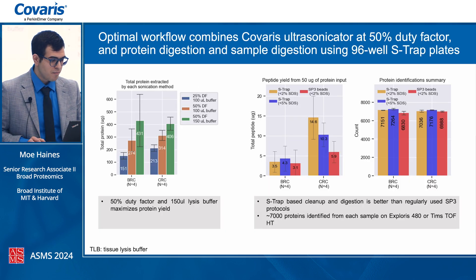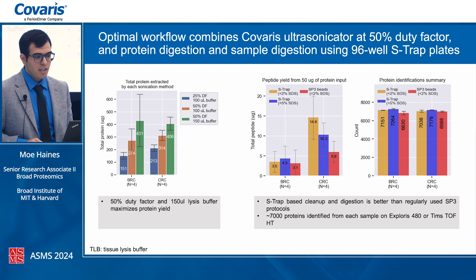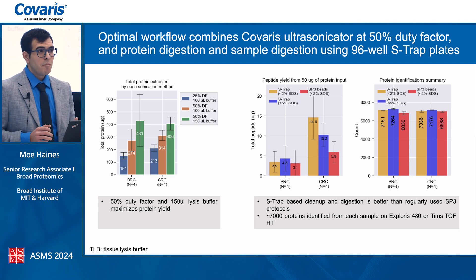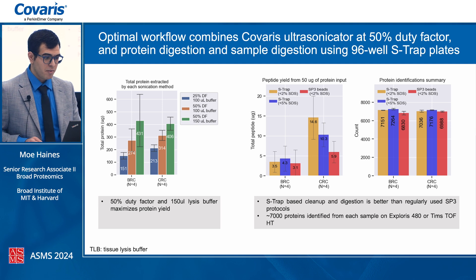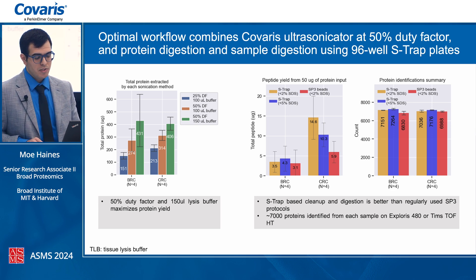For the initial optimization steps, we evaluated two conditions: the duty factor representing active sonication time, and the amount of buffer used to extract protein from scrolls. We used breast cancer and colorectal cancer blocks that were about 20 years old, with four replicates each. We compared a standard 25% duty factor with 100 µL tissue lysis buffer, a 50% duty factor, and 50% duty factor coupled with increased lysis buffer. Combining both conditions gave almost a 2x increase in protein yields extracted.